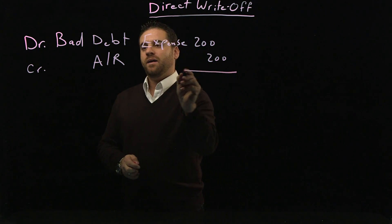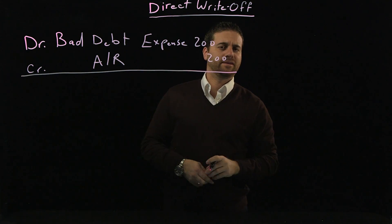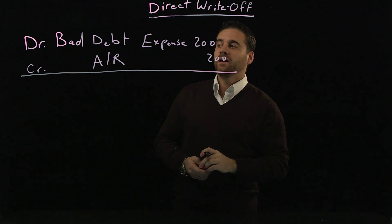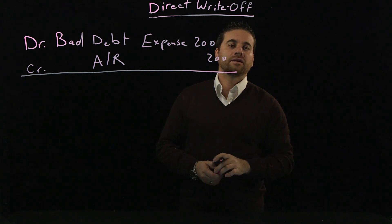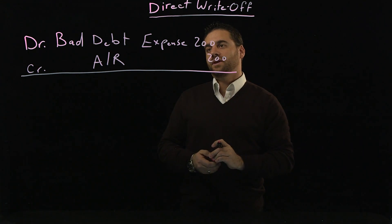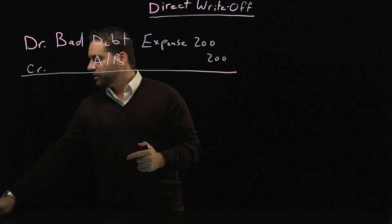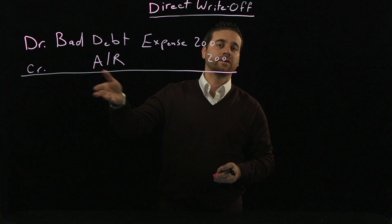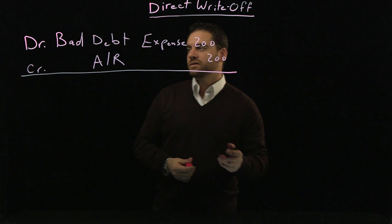What happens if the customer one day decides to come back and pay the amount we already wrote off? Of course, the money is always welcome. We don't tell the customer we wrote it off — we just collect the money. The journal entry for that requires two steps: first, reverse the original journal entry because it's not going to be an expense anymore and the amount goes back to receivable; second, record the collection of cash.